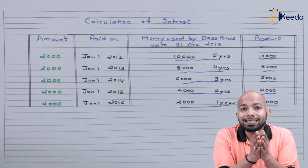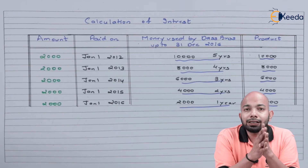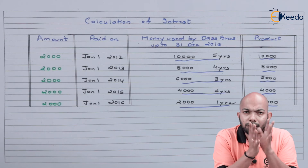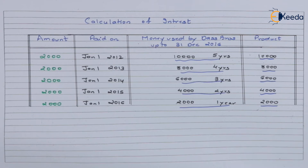We now need to find the rate of interest charged at 5% per annum based on the product column total. Let's figure it out.